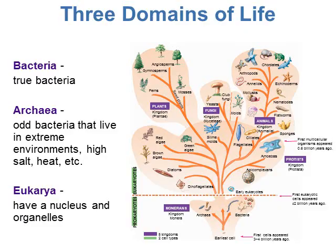The third domain is eukarya — organisms that have eukaryotic cells, meaning cells that have a nucleus and all the different organelles we'll be looking at in the next unit. Under the eukarya domain there are four kingdoms: the plant kingdom, the fungi kingdom, the animal kingdom, and the protist kingdom. When we get to diversity in microbiology, you'll need to know the three domains and a few kingdoms under those domains.